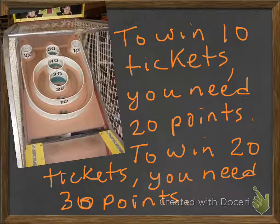So here's an example. Let's say you wanted to go play skee-ball and you wanted to win tickets. And to win 10 tickets, you need 20 points. So in order to win 10 tickets, you need 20 points. To win 20 tickets, you need 30 points. So how do we solve this? What is the rule that goes along with this?